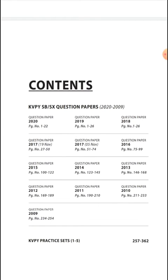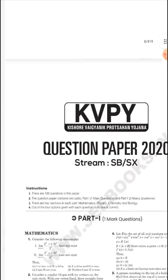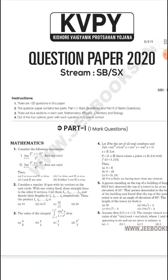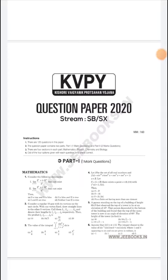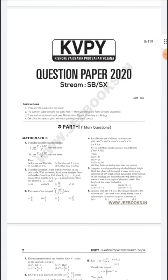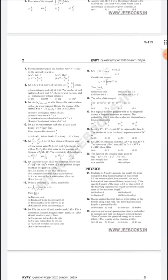And the content: KVPY CSB OSX question papers 2020 to 2009. The question papers from 2020, 90, 80 - all these are given with their respective page numbers. The first few questions are from the maths section and I really prefer physics, chemistry and biology, so I'm not going into maths. We'll go to the physics part.